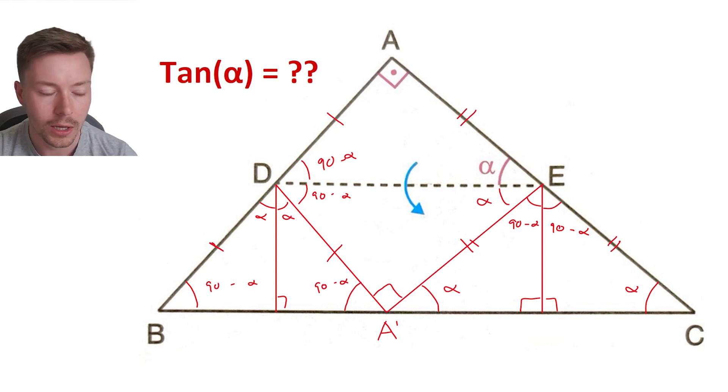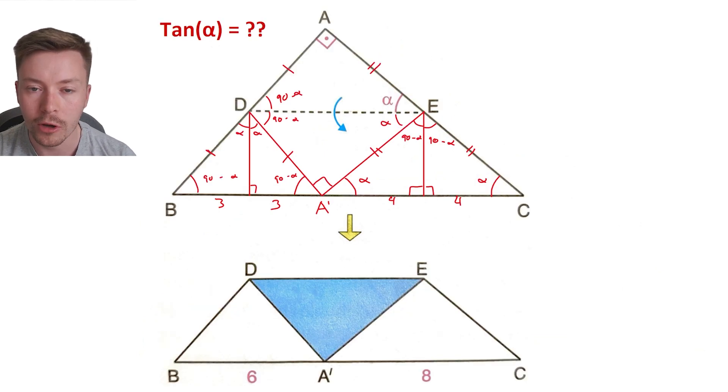B D A apostrophe, A apostrophe C, and then I am going to refer back to the original diagram with my six and my eight and use that to label the threes and the fours of these bottom triangles.